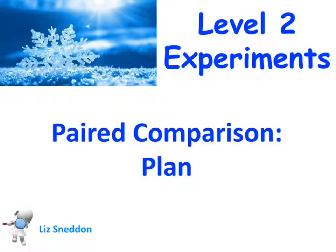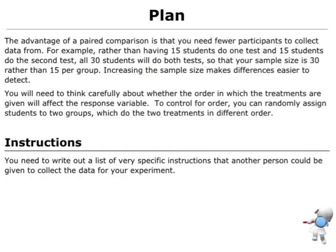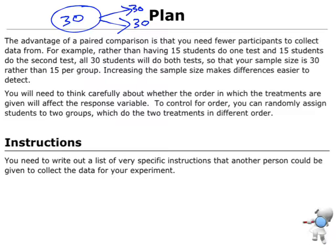Let's have a look at coming up with a plan for our paired comparison experiment. One of the big advantages of having a paired experiment is that we don't need as many people. Because I'm going to have one group of people doing both tests, if I had 30 in the original group, I'm going to get 30 data values for each test. If I was doing it as two independent groups, I'd have to split them in half and only have 15 in each side.